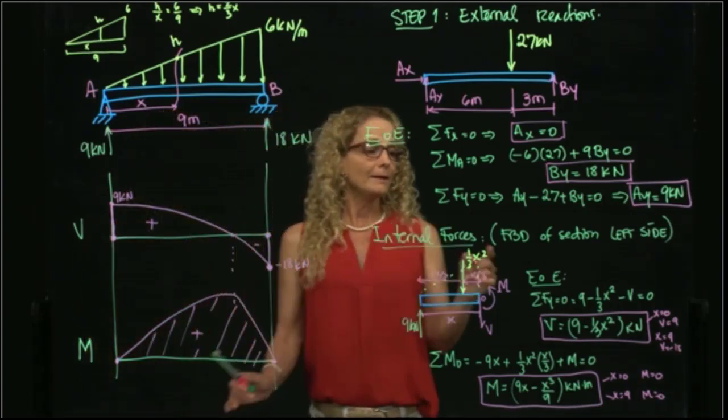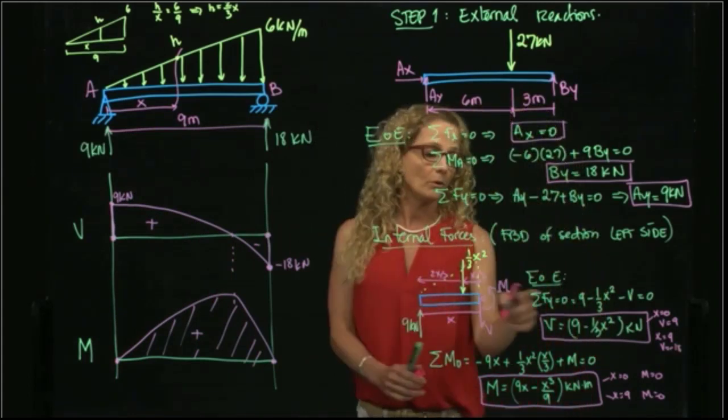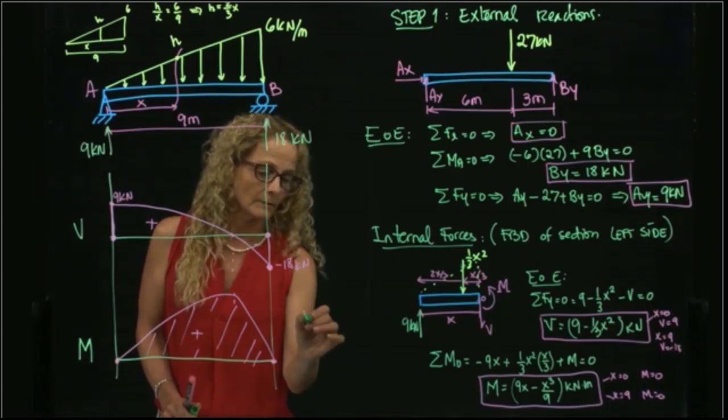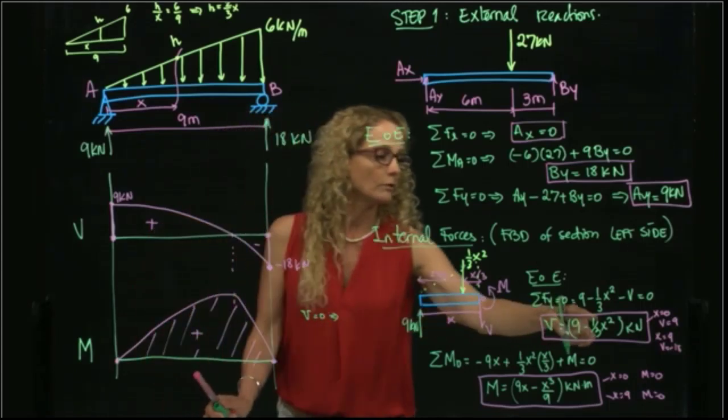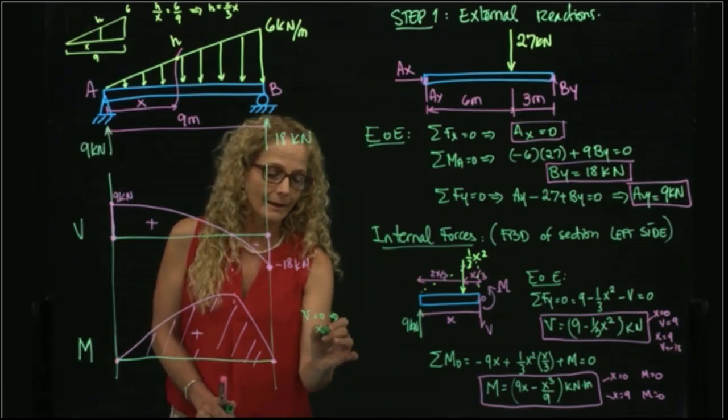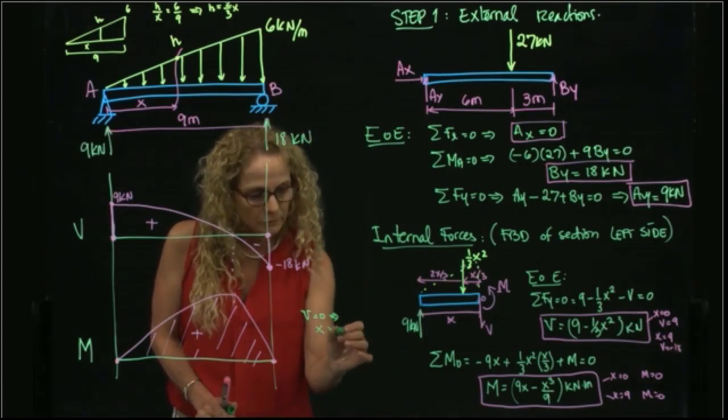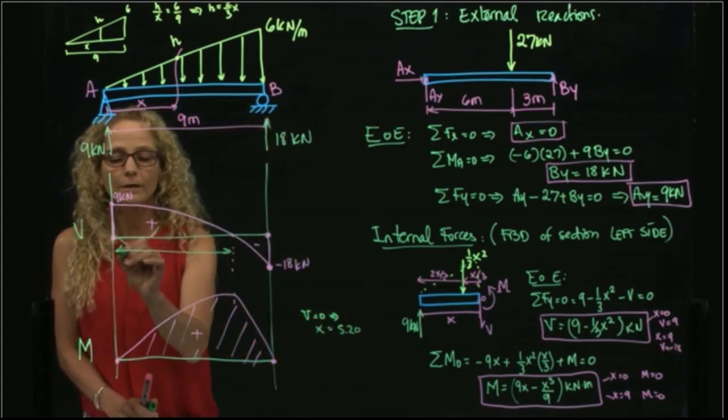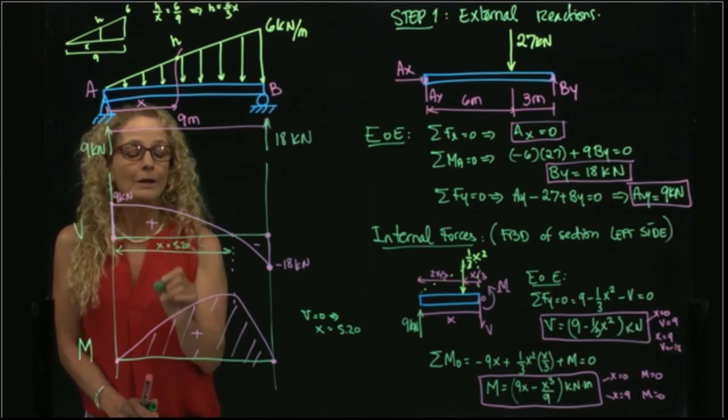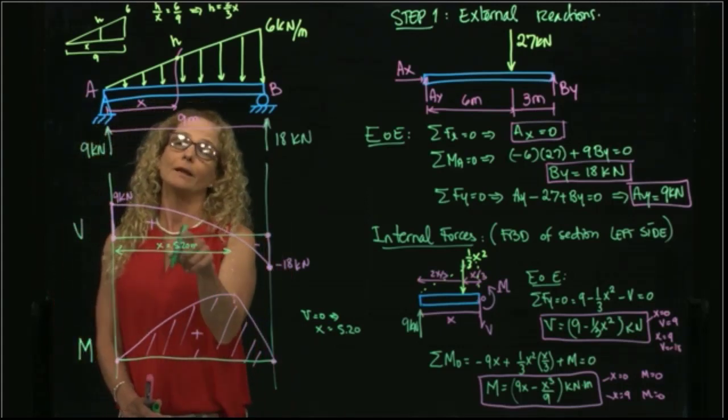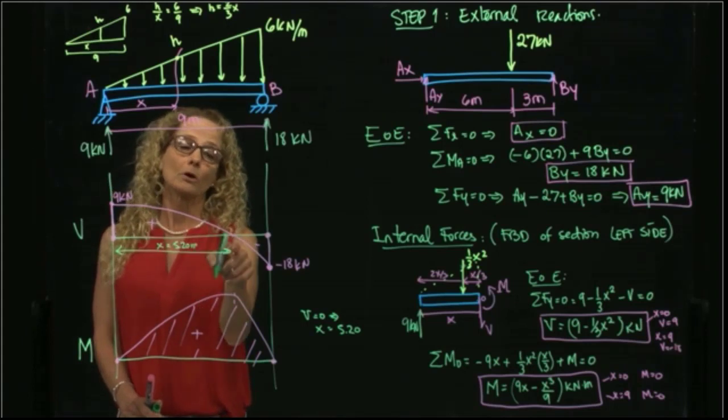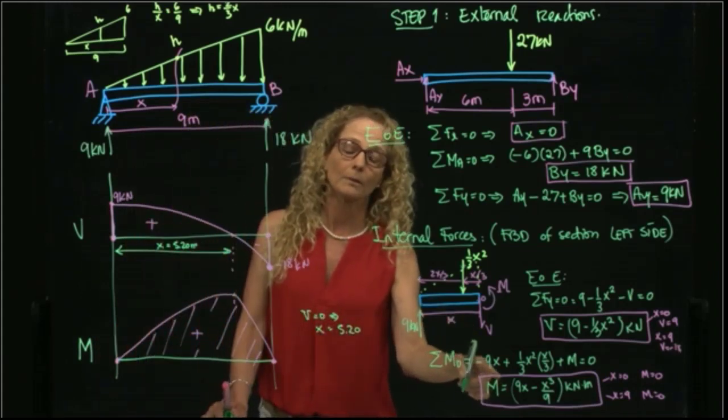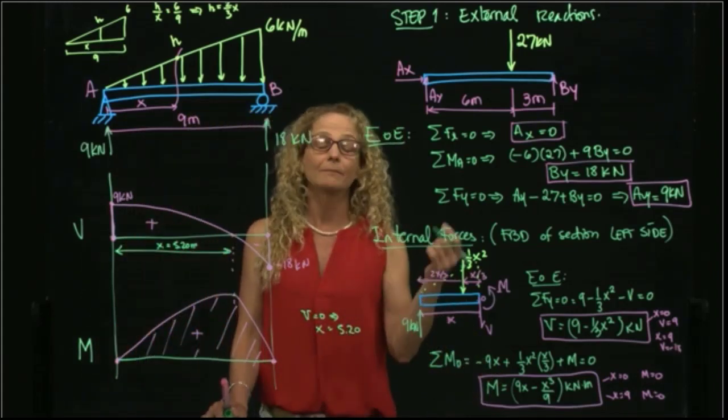Then, if we make this equal to 0 to find that point, we make the shear equal to 0. And I solve for X, I get that X is equal to 5.20. So I actually have this value over here, that X equals 5.20. So I can take this value, where the shear becomes 0, and that will give me, if I plug this number into my expression for the moment, it will give me the maximum moment of the beam.